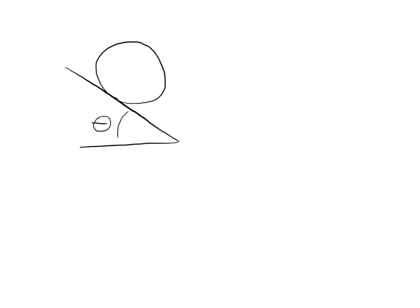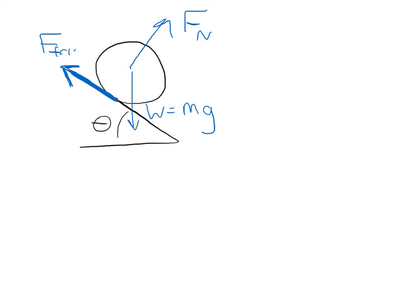The first thing we need to do is consider all the forces acting on this object. The first force is the weight, equal to mass times gravity. The second force is the normal force, which we'll calculate later. The third force is static friction, acting at the surface where the ball meets the ramp — that is actually where it's acting.